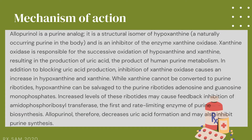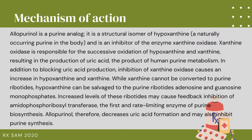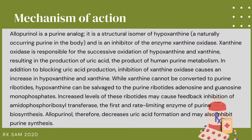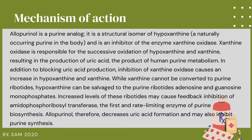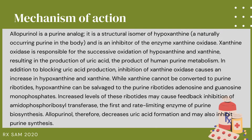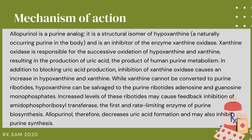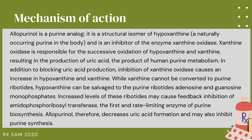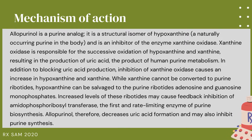Mechanism of action: Allopurinol is a purine analog. It is a structural isomer of hypoxanthine, a naturally occurring purine in the body, and is an inhibitor of the enzyme xanthine oxidase. Xanthine oxidase is responsible for the successive oxidation of hypoxanthine and xanthine, resulting in the production of uric acid, the product of human purine metabolism.